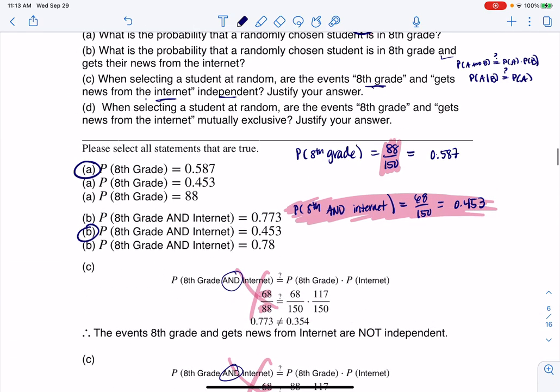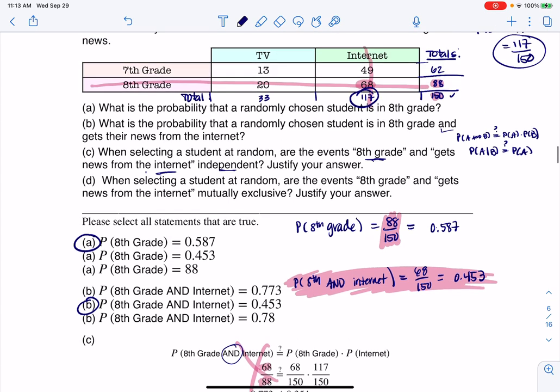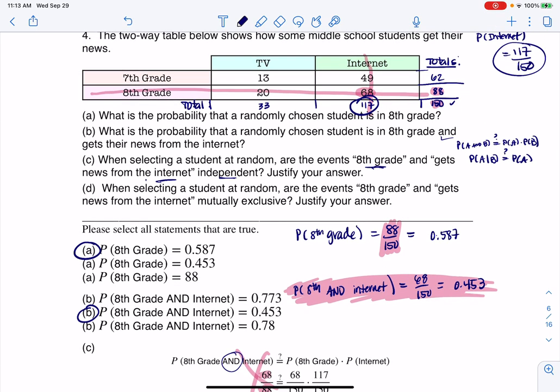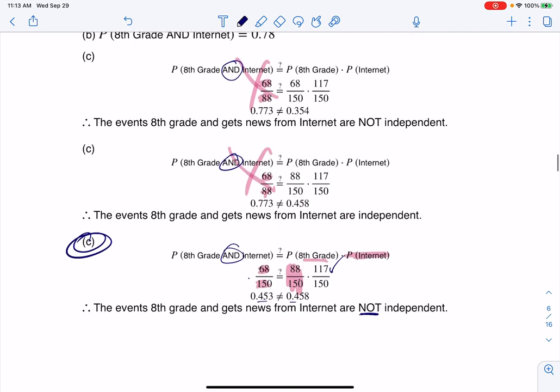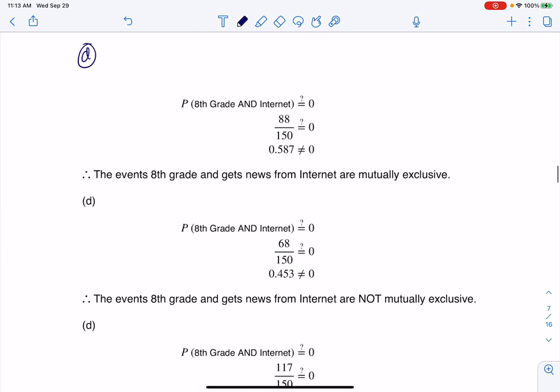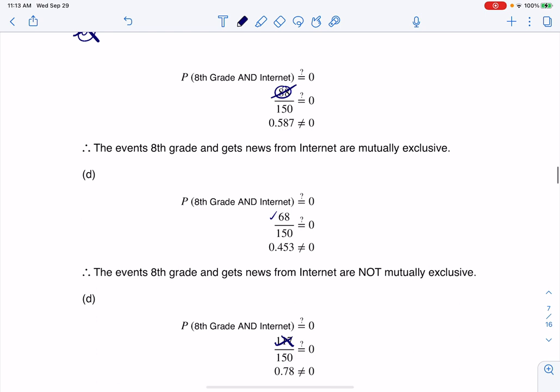Now let's look at part D. It says when selecting a student at random, are the events eighth grade and internet mutually exclusive? I need to check if the probability of A and B equals zero. We actually already figured it out - we know that 68 out of 150 does not equal zero. As I look at these choices, I see this has the wrong numerator, this has the correct numerator, this one does not. So then that becomes my answer - they're not mutually exclusive.